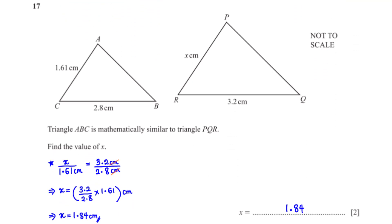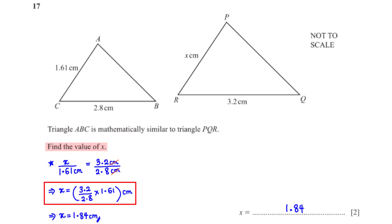Triangle ABC is mathematically similar to triangle PQR. Find the value of x. For similar shapes, the ratio of corresponding sides must be equal: x over 1.61 cm equals 3.2 cm over 2.8 cm. When we make x the subject and type this into the calculator, we get 1.84 cm.